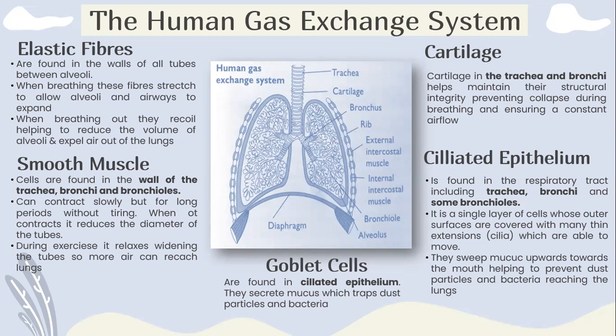Elastic fibers are found in the wall of all tubes and between alveoli. When breathing in, these fibers stretch to allow alveoli and airways to expand. When breathing out, they recoil, helping to reduce the volume of alveoli and expel air out of the lungs.